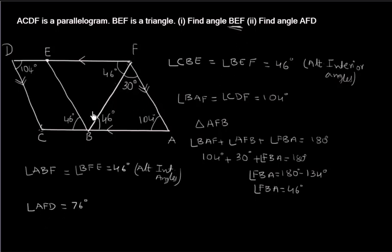Angle BFD equals 46 degrees because they are alternate interior angles. Now, angle AFD equals angle AFB plus angle BFD, which is 30 degrees plus 46 degrees, giving 76 degrees. So the two answers are: angle BEF is 46 degrees and angle AFD is 76 degrees.